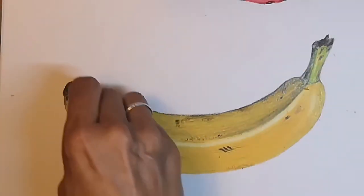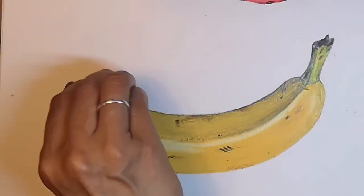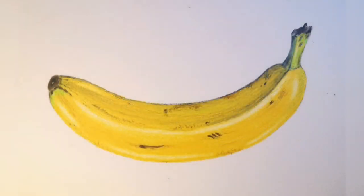To show the light reflecting off the banana, use the edge of a rubber and rub out the yellow so it becomes lighter.